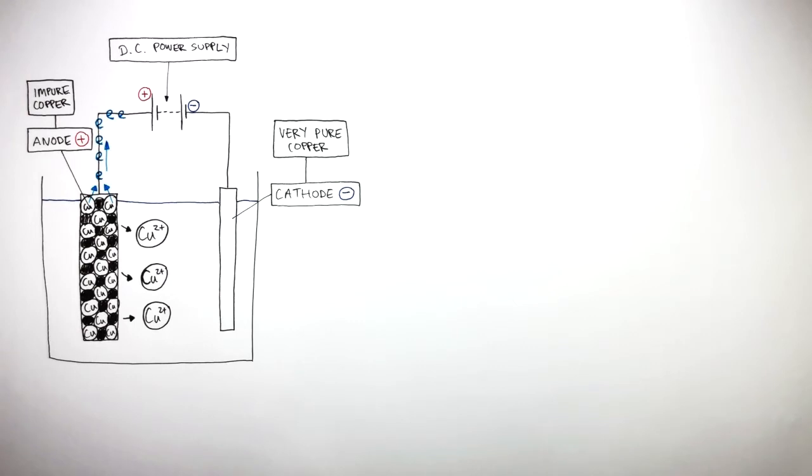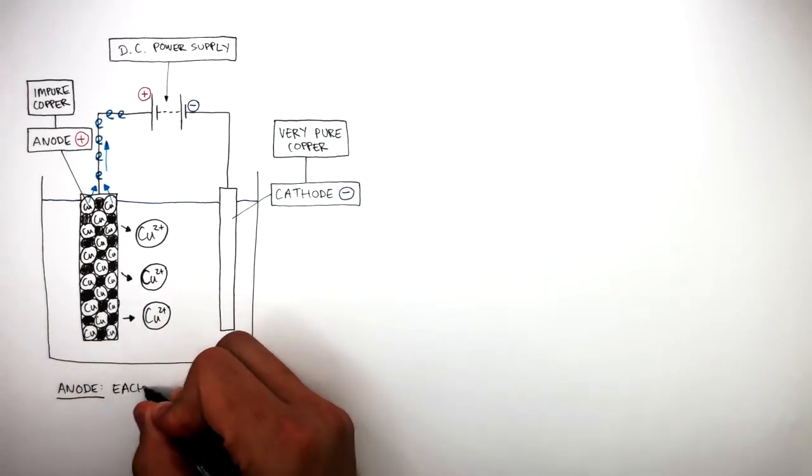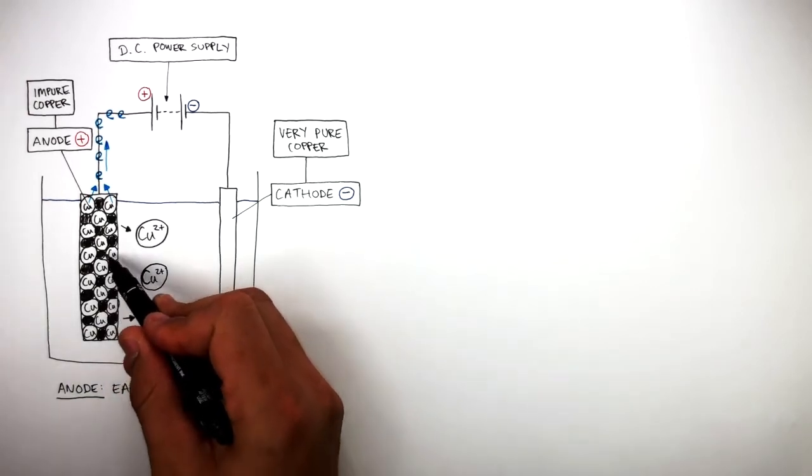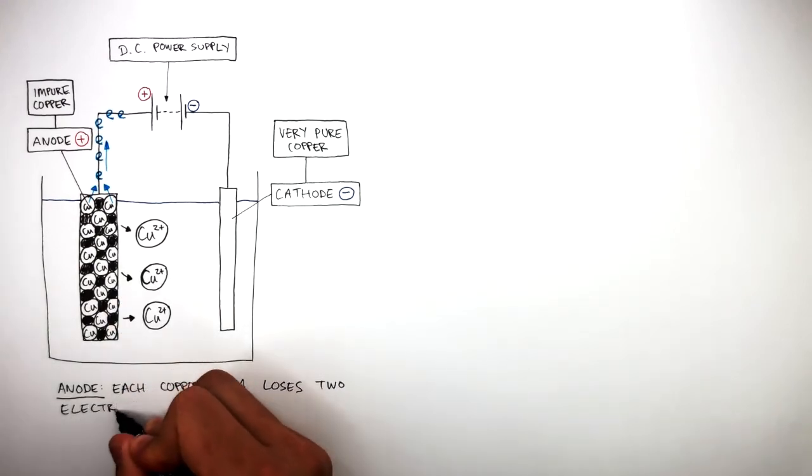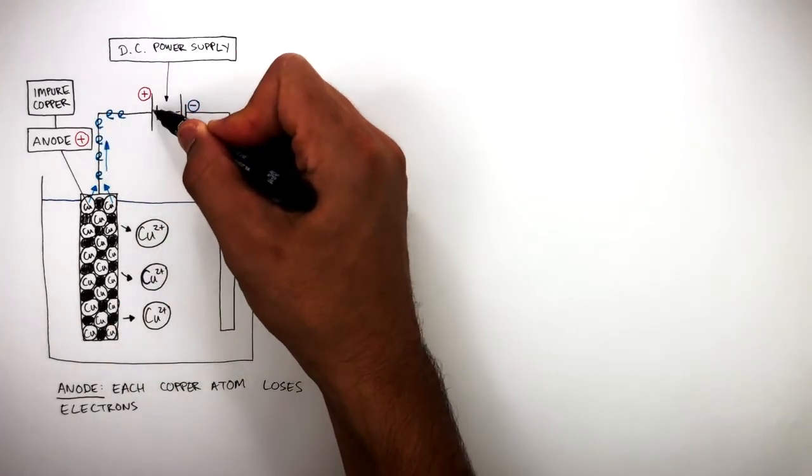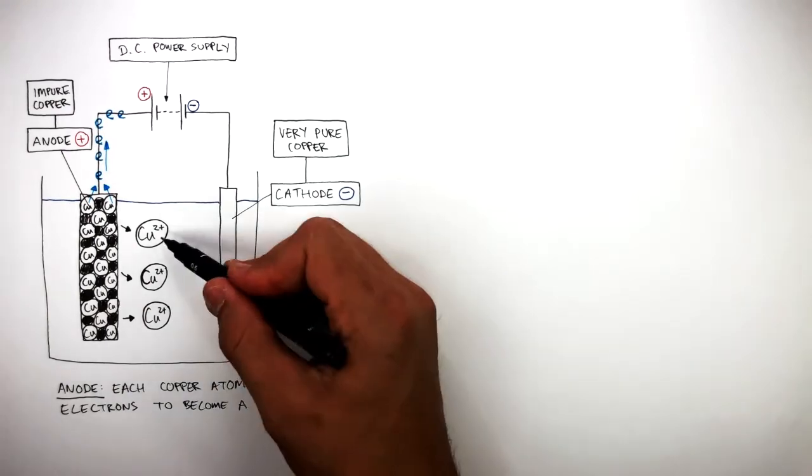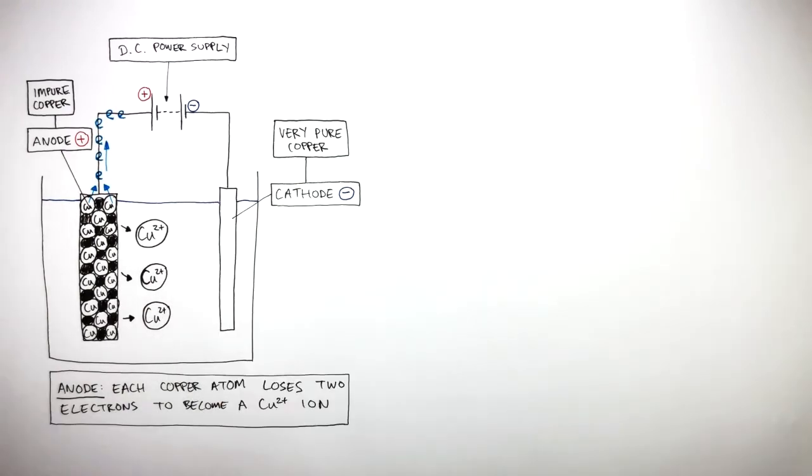Let's summarize what happens at the anode. Each copper atom loses two electrons to become a Cu2+ ion. These Cu2+ ions are dissolved in solution where they are free to move. These positive ions are attracted to the cathode.